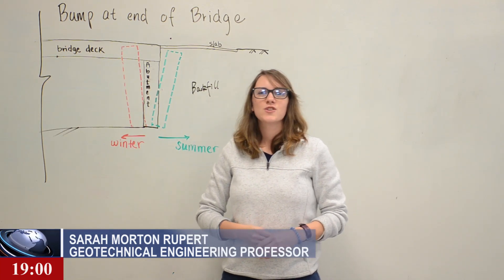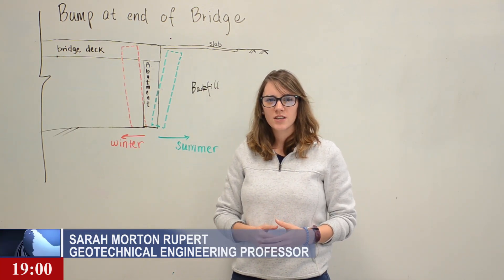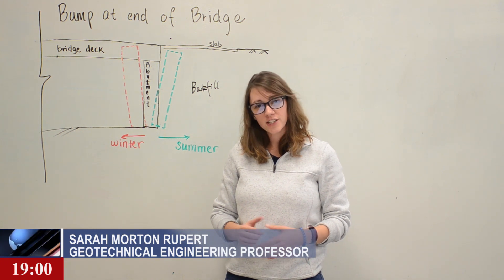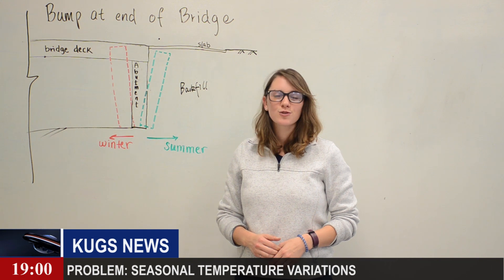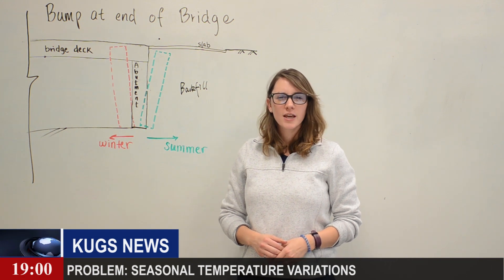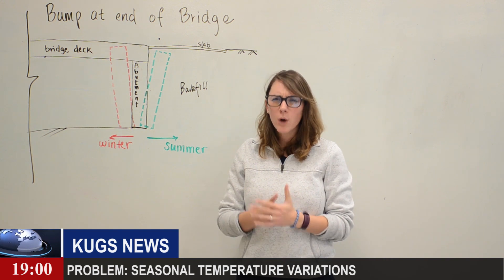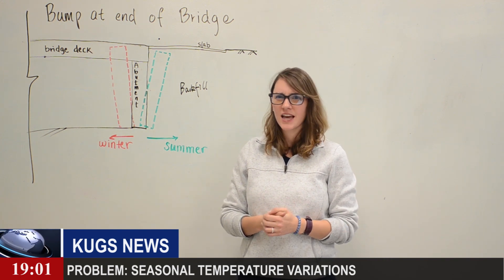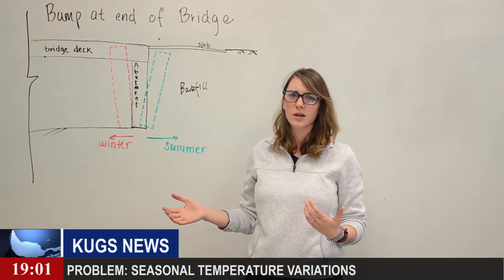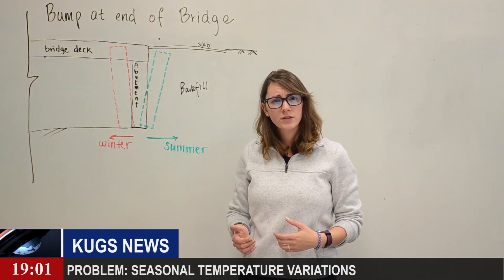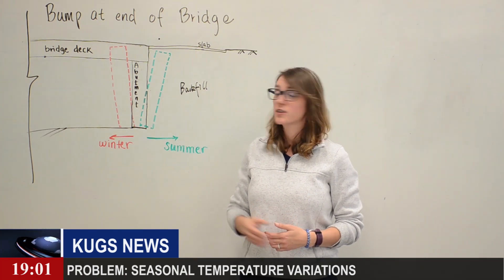Yes, thank you Chen. The bump in the road is actually caused by differential settlement at the end of the bridge, near the interface between the abutment and the embankment. There are several reasons for this bump problem, for example, soil erosion or poor compaction of the backfill. But one of the most common reasons is seasonal temperature variations, because it's a naturally occurring phenomenon. Regardless of the soil type or how well it's compacted, these temperature variations will still create this bump.